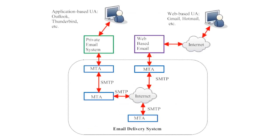To begin, let's examine an illustration that summarizes the basic parts of an email system. For now, let's pretend that an email message is moving from left to right. The sender is the user on the left and the recipient is the user on the right. I'll call the user on the left Jack, and the one on the right Jill.